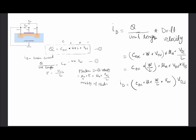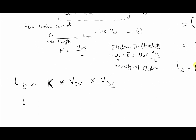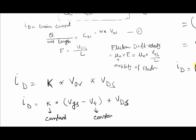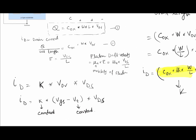When a small VDS is applied, the current equation is ID = K × Vov × VDS, where K = μn × COx × (W/L) is a constant. Substituting Vov = VGS − VT, for a particular constant value of VGS, ID is directly proportional to VDS.